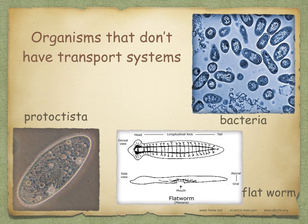Most living organisms need a transport system. Only very small organisms — as you can see in this diagram, bacteria, protocytists, and some worms — do not have transport systems. This is because their bodies are so small or so flat that they can rely on diffusion alone to obtain oxygen and to remove carbon dioxide.